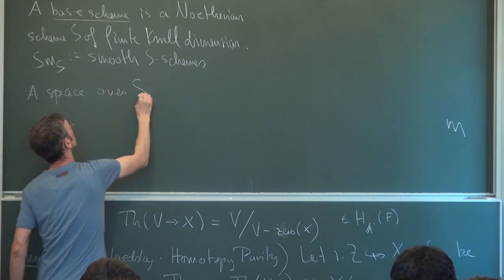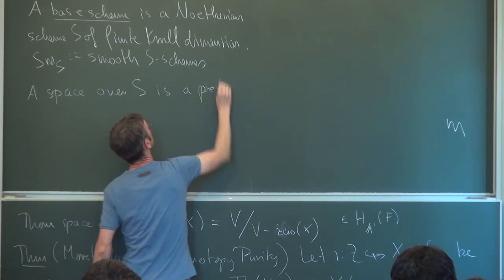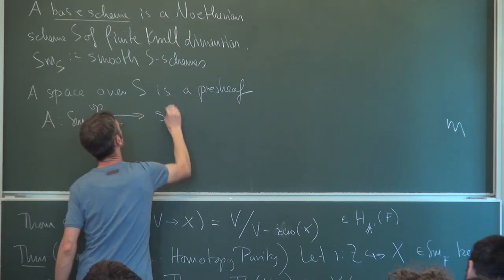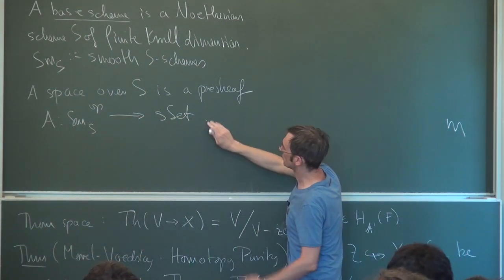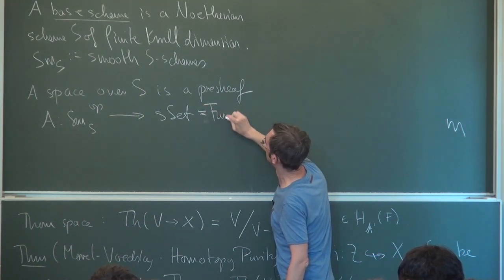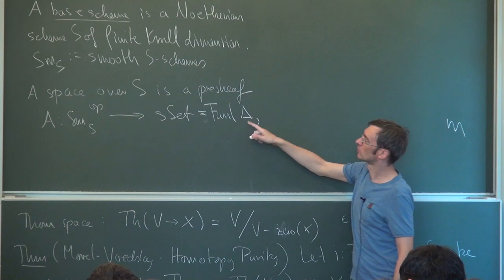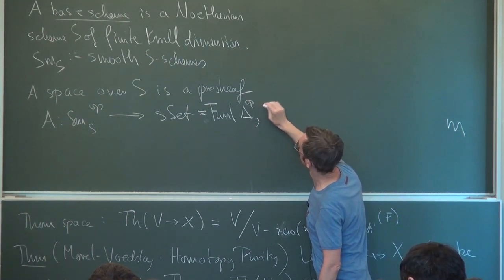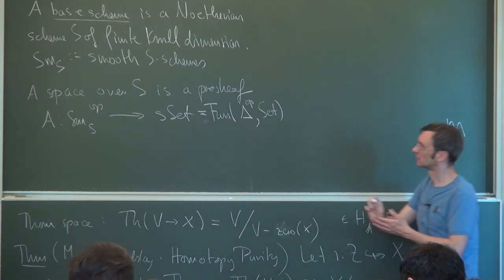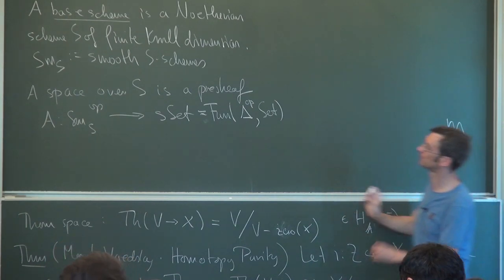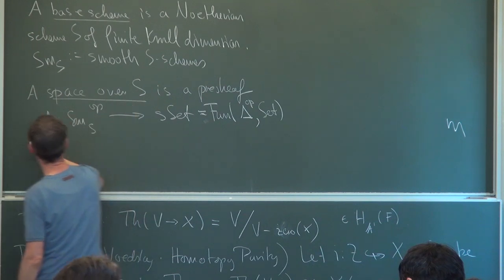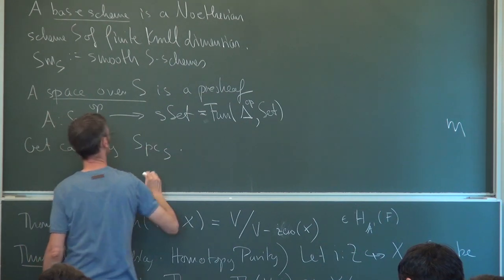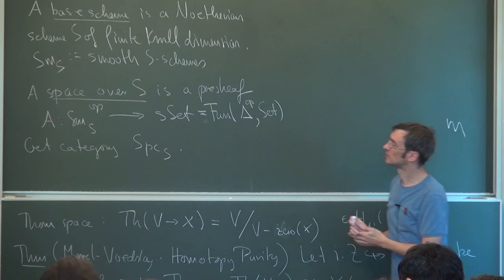And this is the following: a space over S is a presheaf on this category with values in the category of simplicial sets. Take your favorite skeleton of the category of finite non-empty ordinals and monotone maps, and functors on that—these are simplicial sets.